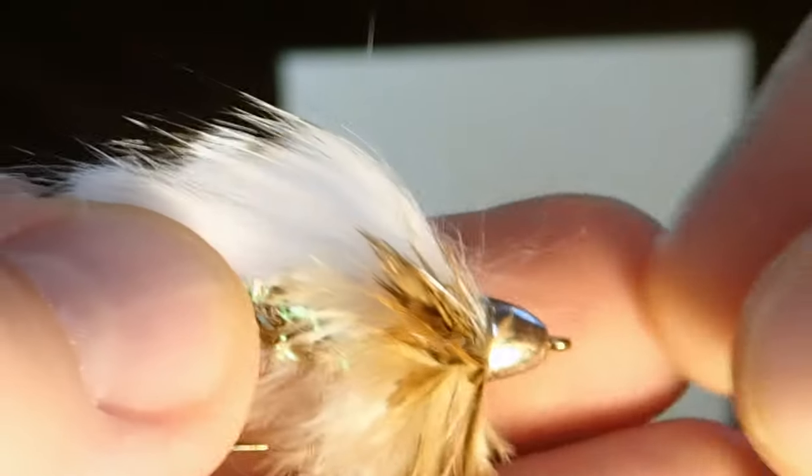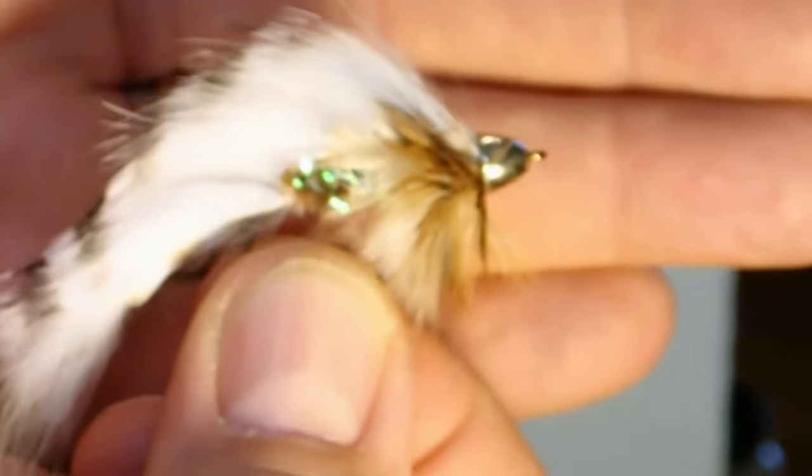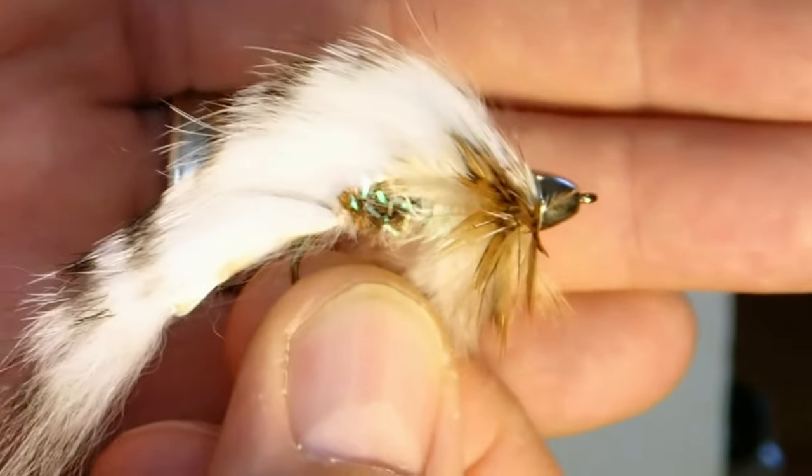But here we are, here's the finished, we'll call it the FN stripper. And like I said, unless anyone else has seen this or if we've got another fly out there that I'm copying accidentally, let me know, because we don't want to discredit anyone else's work. But anyway, that's it, it's a real effective little streamer, and I hope you have a great time tying it, tight lines.